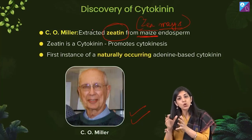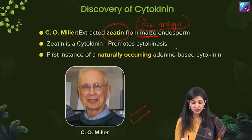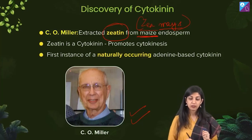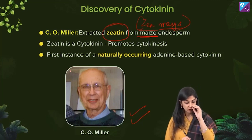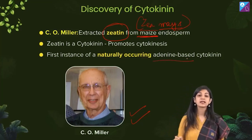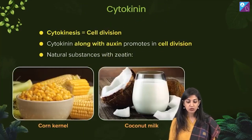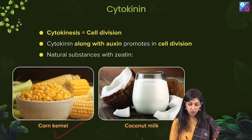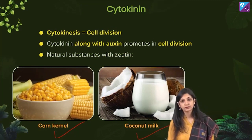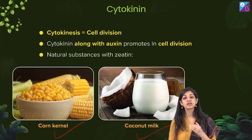Zeatin was also found in coconut milk. So zeatin is a cytokinin which promotes cytokinesis. It was the first naturally occurring adenine-based cytokinin to be isolated from plants. They were extracted from corn kernels and coconut milk — these are the two rich sources of zeatin.